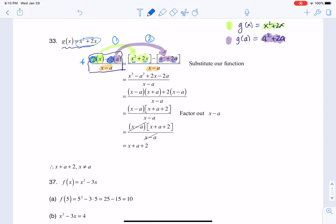So if I start to distribute this, I'm going to have, if I distribute this negative, this would have been x squared plus 2x minus a squared minus 2a, and then I would have that over x minus a. So what I did from this step to this step was I just rewrote it a little bit.